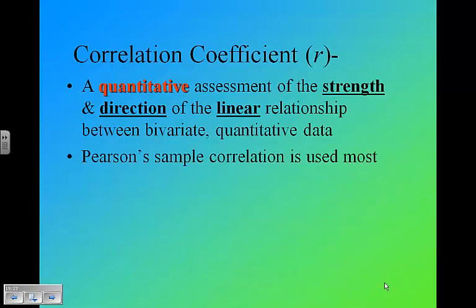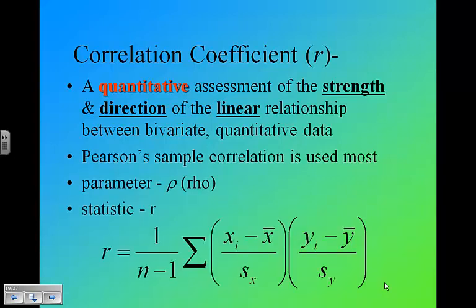Pearson sample correlation, that's just the name of it. The parameter is rho, but the statistic we generally use is r. You want to pay attention to the statistic r. And there's the formula for r. The good news is you're never going to be asked to use that formula to calculate r. R can be found on a calculator. Using a graphing calculator, you can find r very easily. You don't have to memorize this, you won't have to use it.